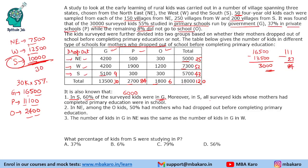Moreover, in S, all surveyed kids whose mothers had completed primary education were in school. This point is important: the kids whose mothers had completed primary education — this was the completing-education table — all were in school, meaning the O value is 0 for that group. The total is 43, this is 9, so this value will be 34, meaning 3,400.